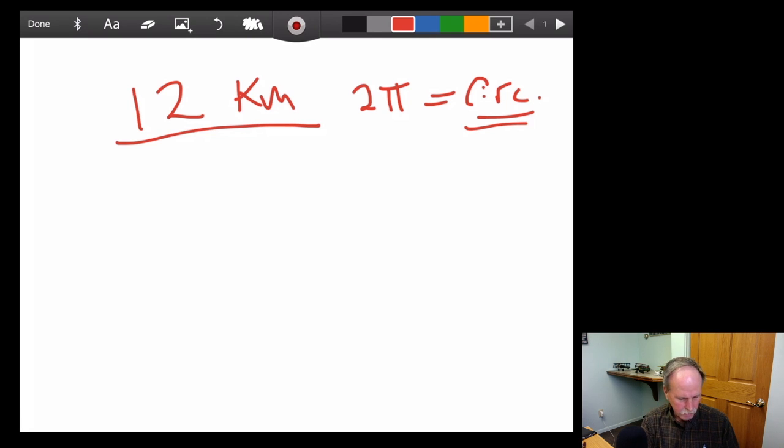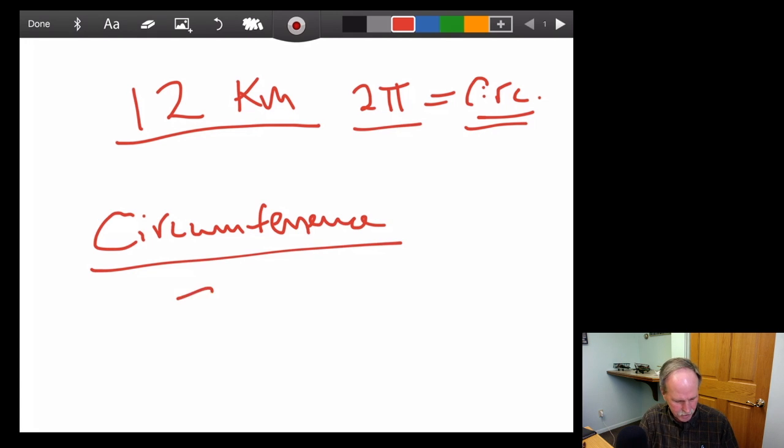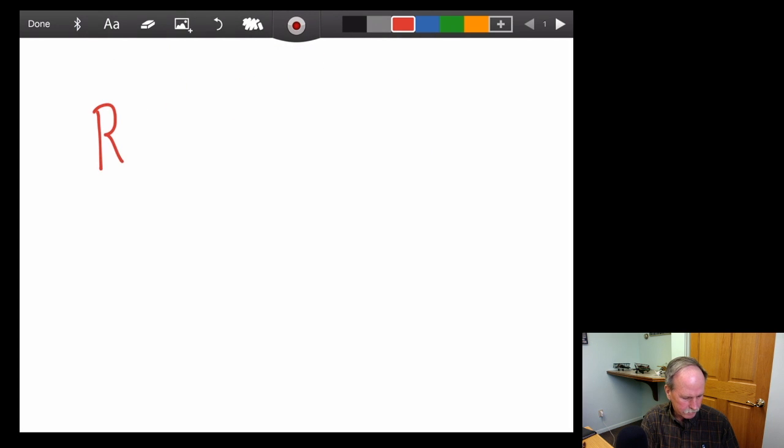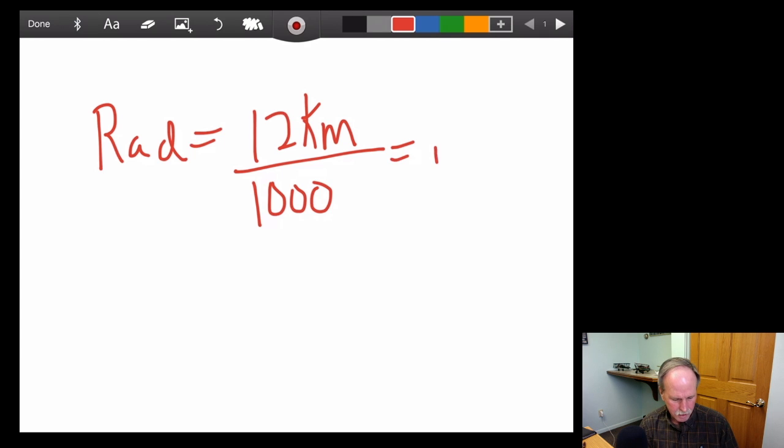That's right, 2 pi. So, each radian would be 12 kilometers. Pretty slick, huh?